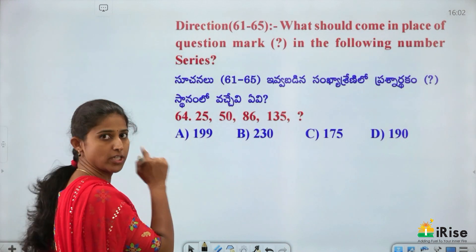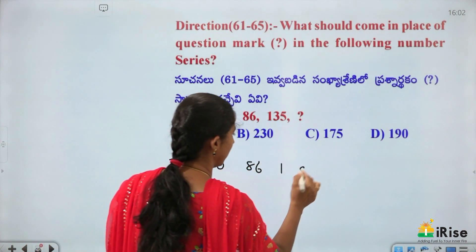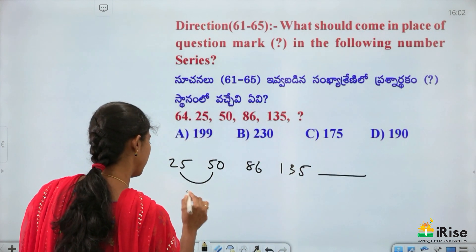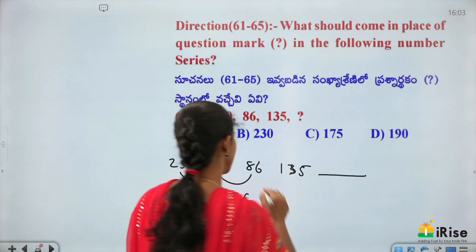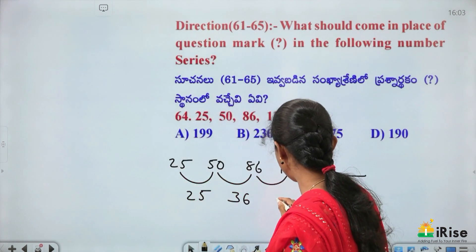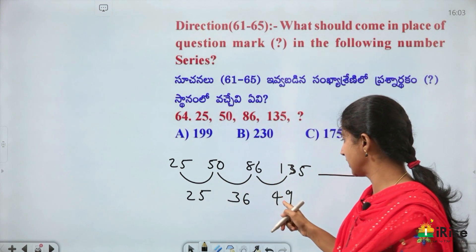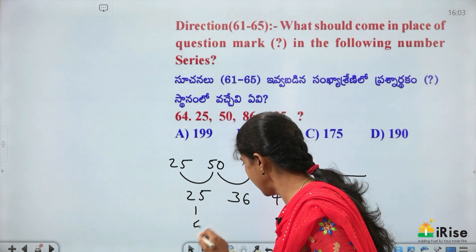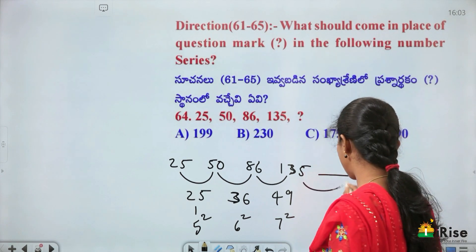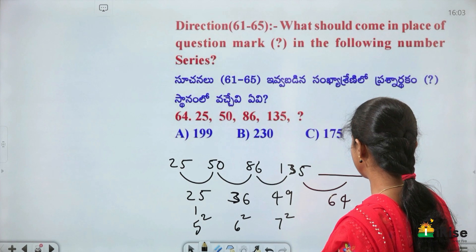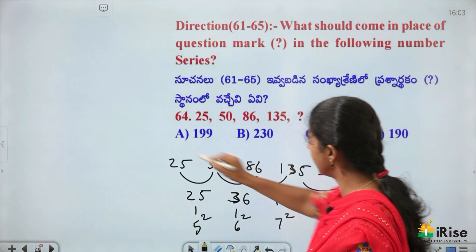Series: 25, 50, 86, 135 — what is the next number? The differences are 25, 36, 49 — these are 5², 6², 7². The next difference is 8² = 64. So 135 + 64 = 199 is the answer.